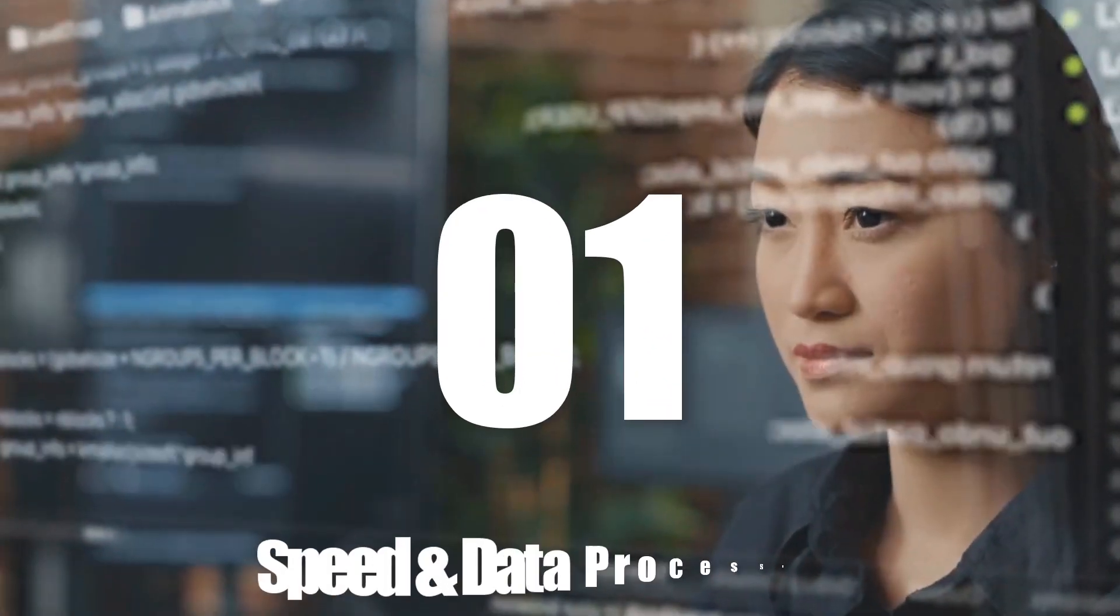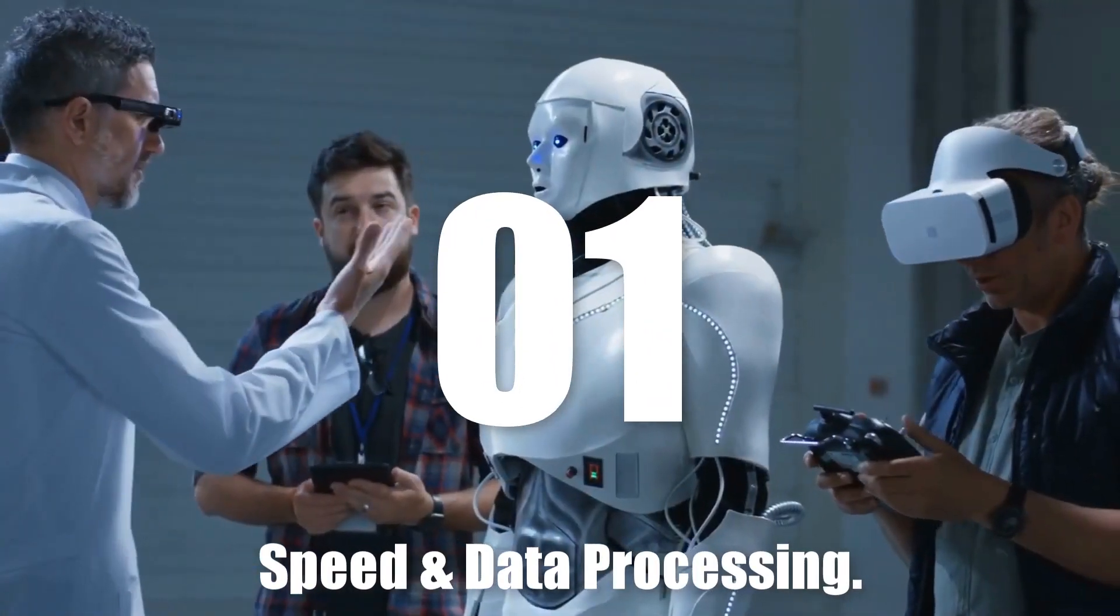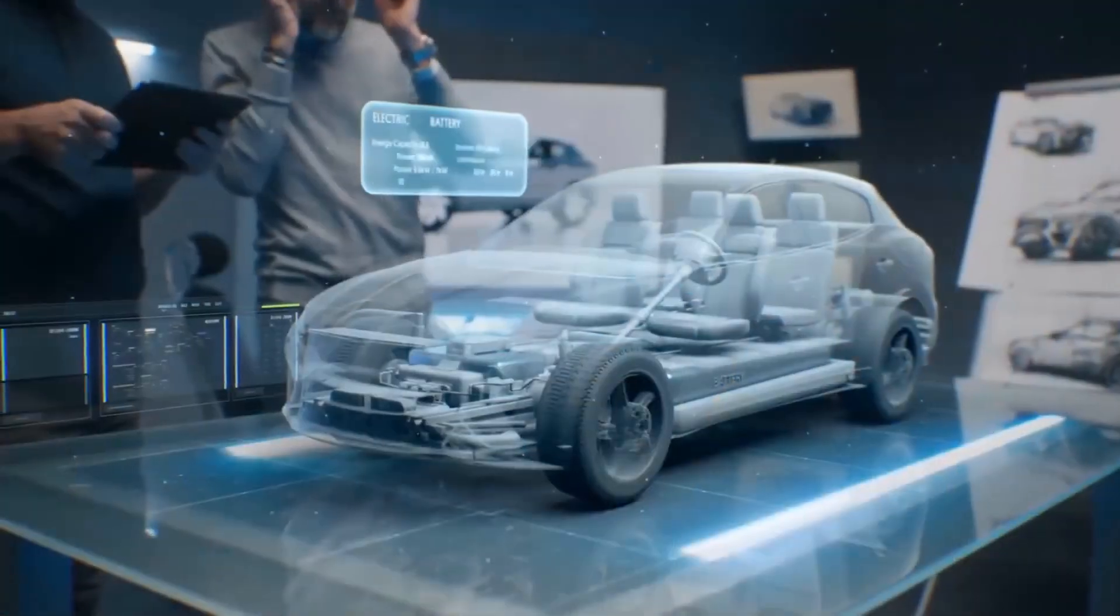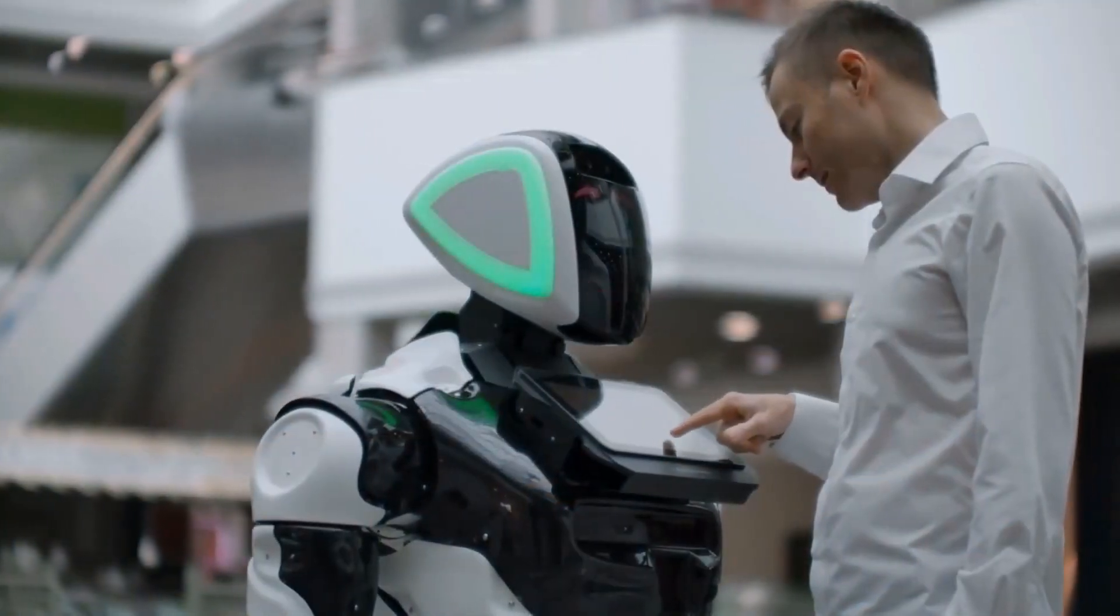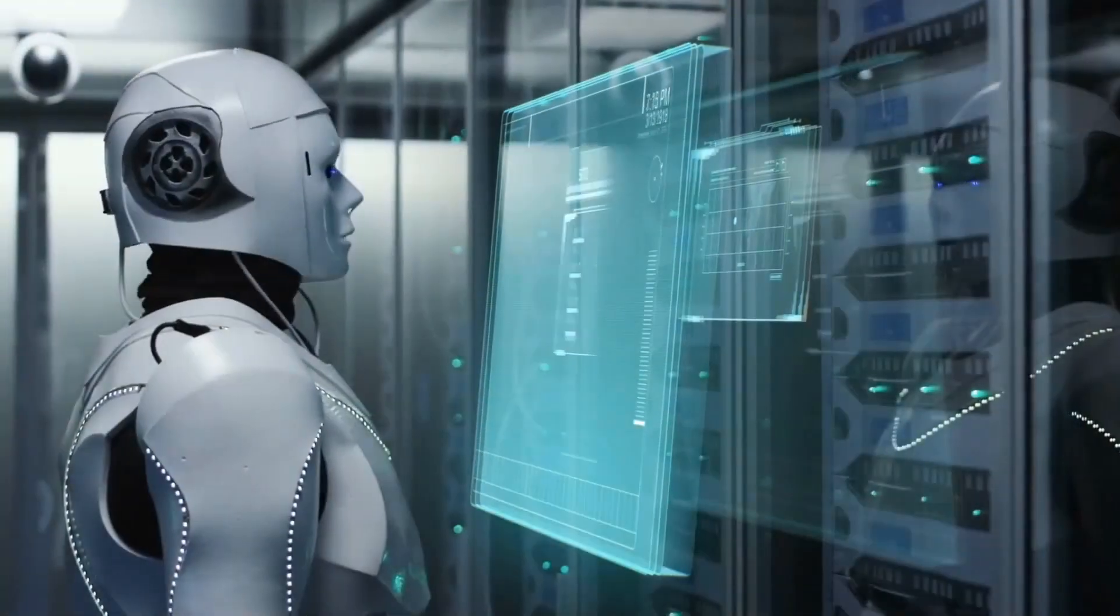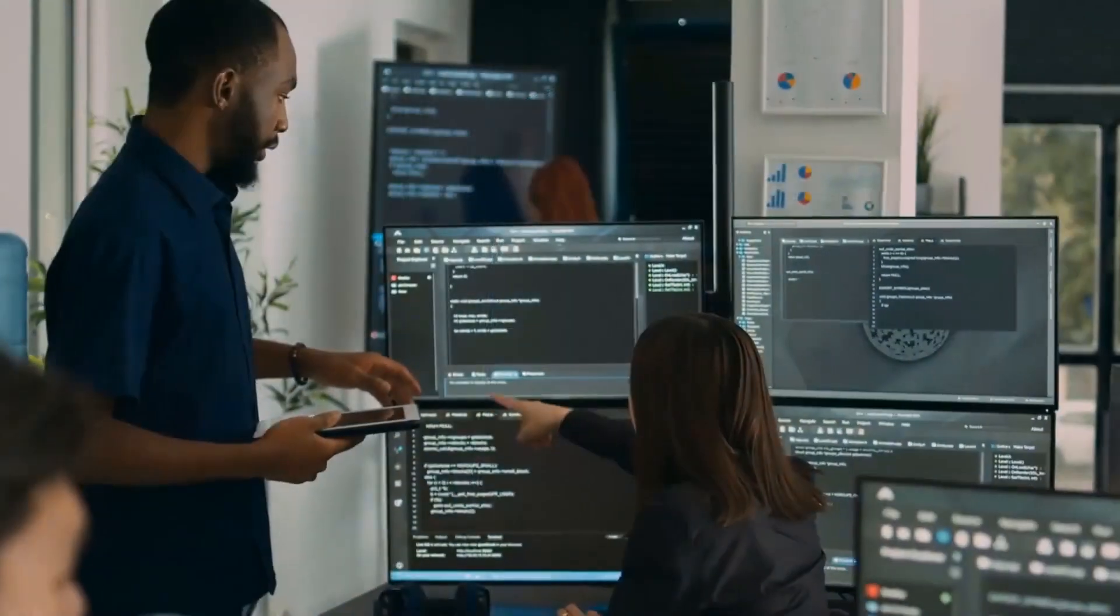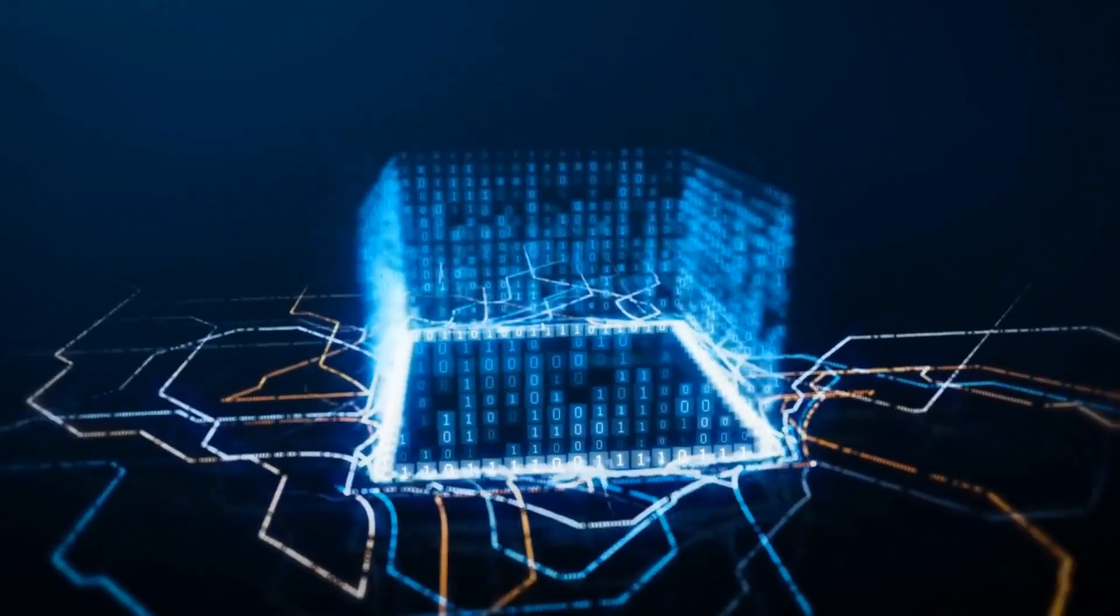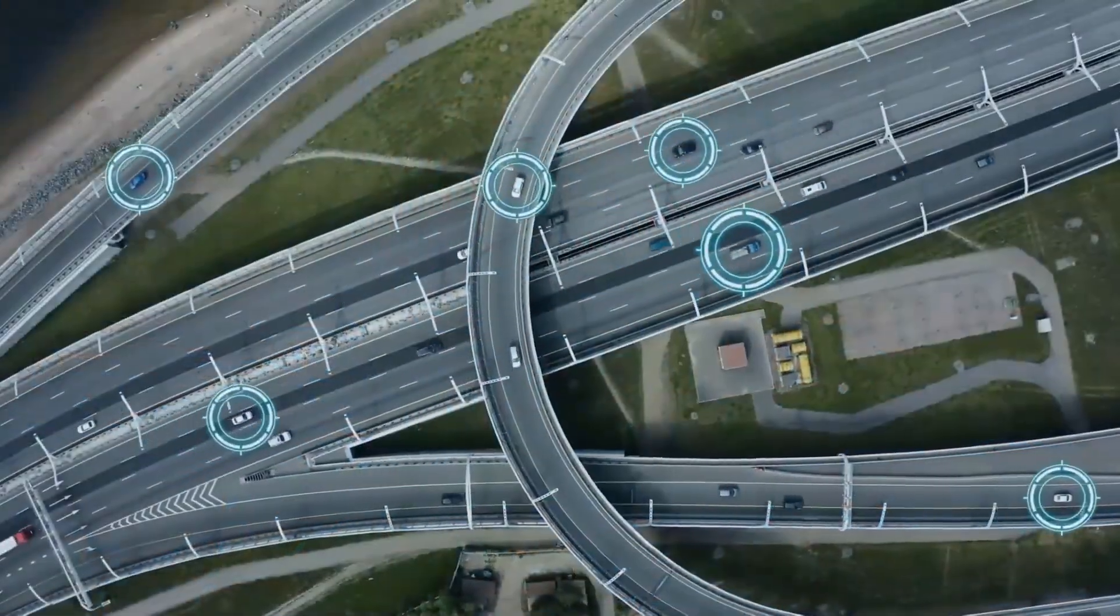Number 1. Speed and Data Processing. First up, let's talk about raw processing power. AI can analyze massive amounts of data in seconds, something no human brain can match. Supercomputers process trillions of calculations per second, making AI unbeatable when it comes to speed and efficiency.